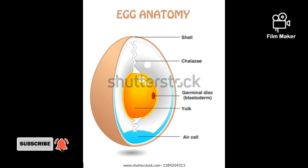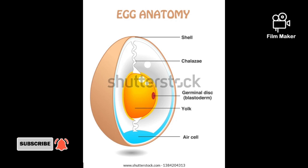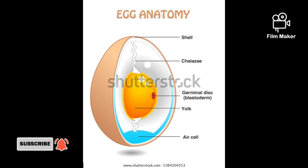The shell, or the outer covering of the egg, may be white or brown. Shell color has no effect on the quality, cooking properties, or nutritive value of the egg. The breed of the bird determines the color of the shell. Composed primarily of calcium carbonate, the shell is extremely fragile. It is porous, which allows it to breathe, and this porous nature allows loss of moisture even if the shell is unbroken.